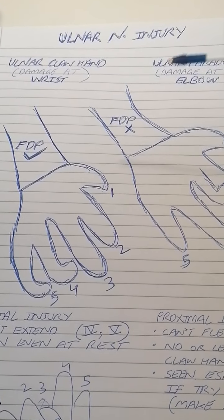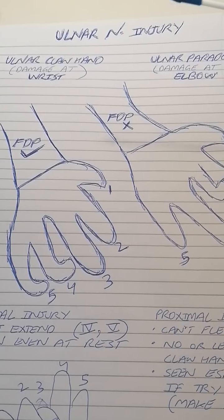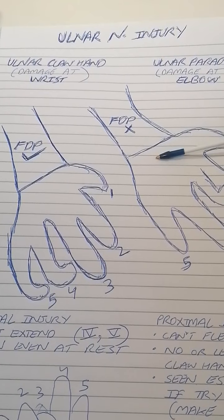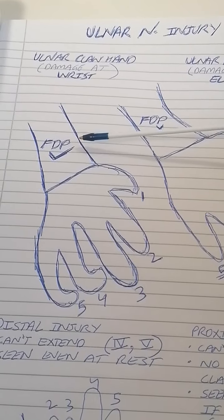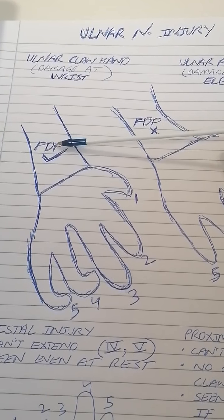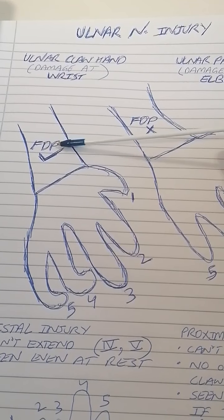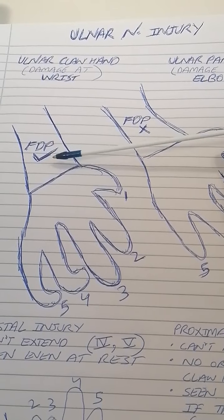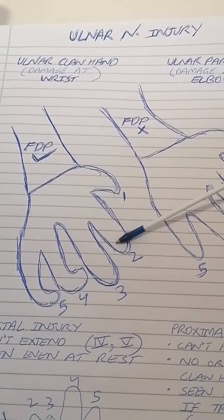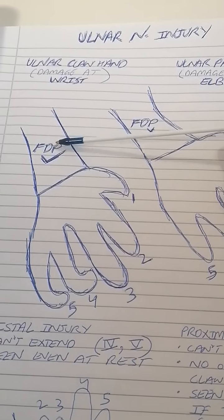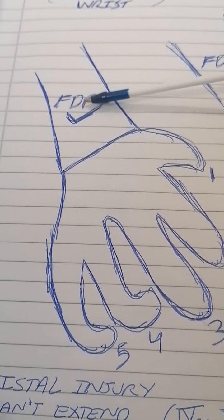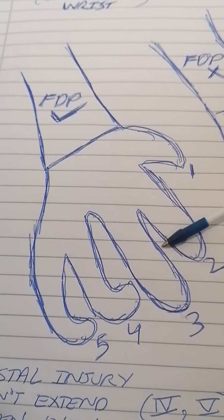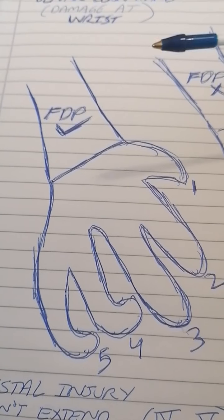First, we must know what FDPs are. Flexor digitorum profundus arises on the medial side of your forearm, but its tendons reach your wrist, palm, and fingers. There are two muscles: flexor digitorum superficialis (FDS) reaches the proximal interphalangeal joints, while FDP — D for distal — reaches the distal interphalangeal joints.